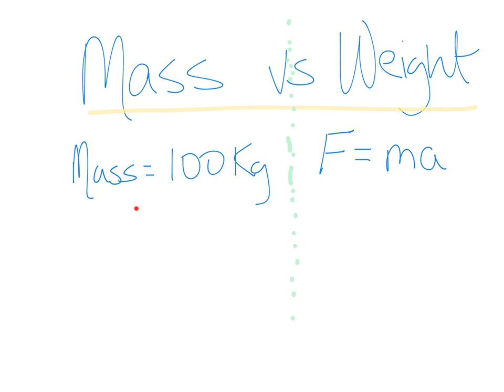Mass doesn't change no matter where we are. He always has 100 kilograms, but weight changes depending on what the acceleration due to gravity is. So here in Alberta, we're at 9.81 meters per second squared versus sea level, which is 10 meters per second squared.